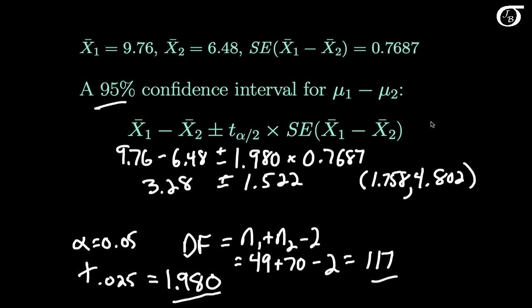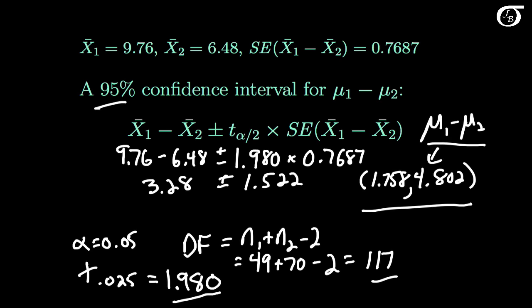We can be 95% confident that the difference mu1 minus mu2 lies somewhere in this interval. Note that this interval lies entirely to the right of 0, so all plausible values of mu1 minus mu2 are greater than 0. Recall that group 1 was the group seeking compensation and group 2 was the group seeking treatment, so this interval gives us some indication that those seeking compensation score higher on the MENT on average. Let's investigate that more formally with a hypothesis test.